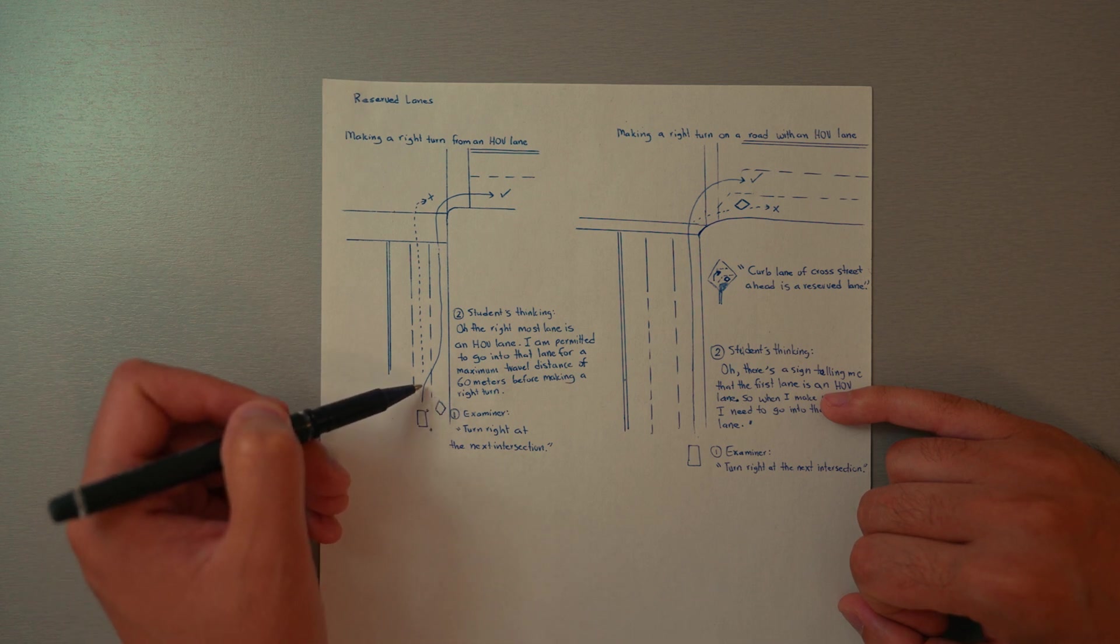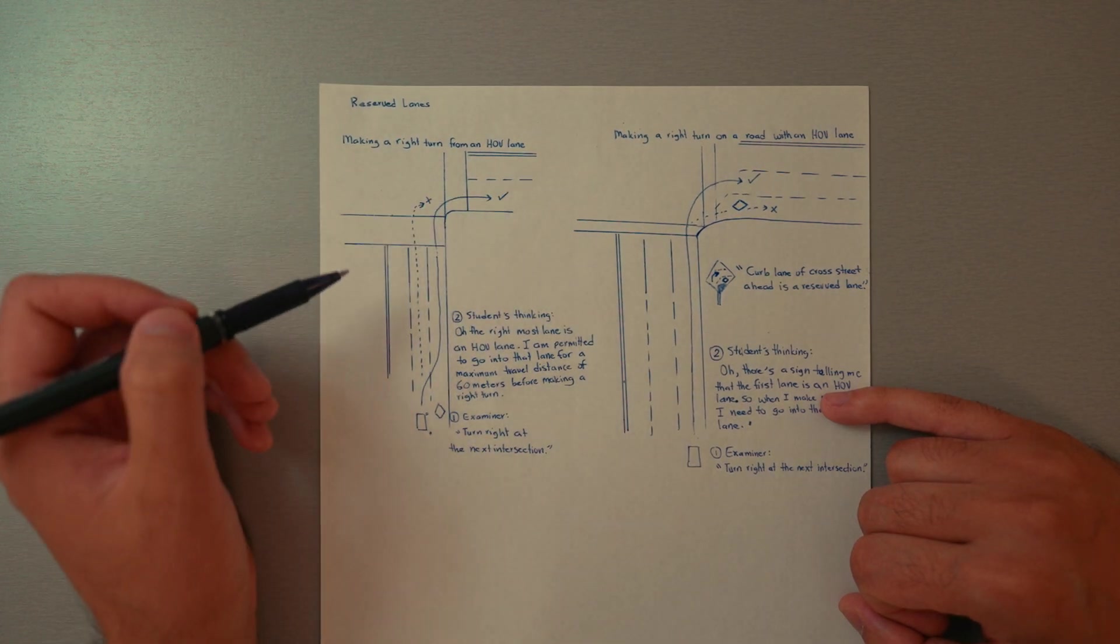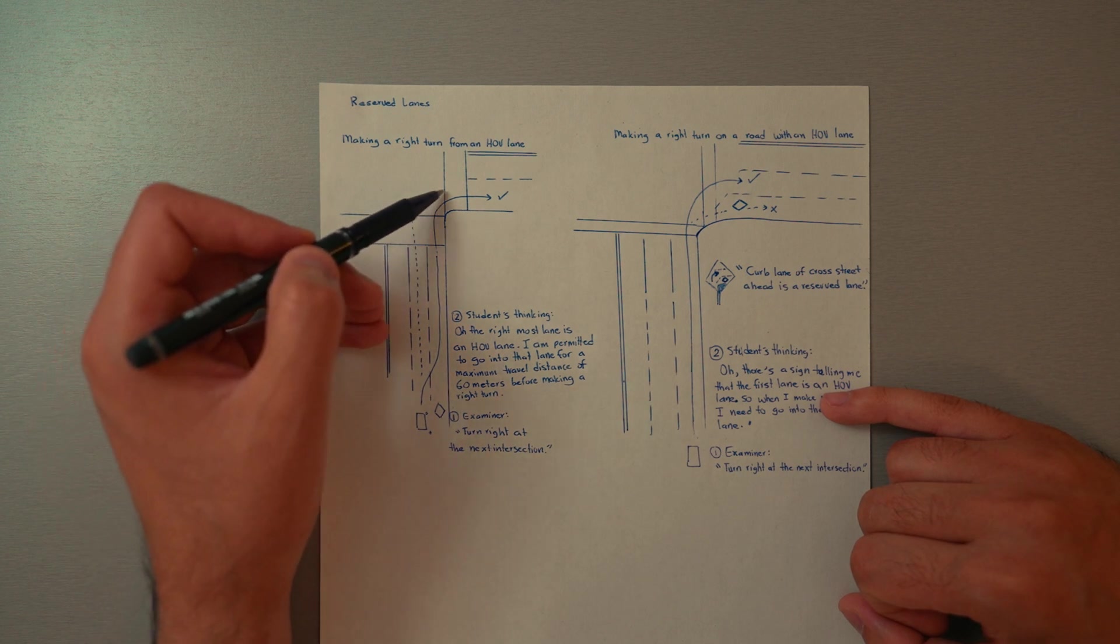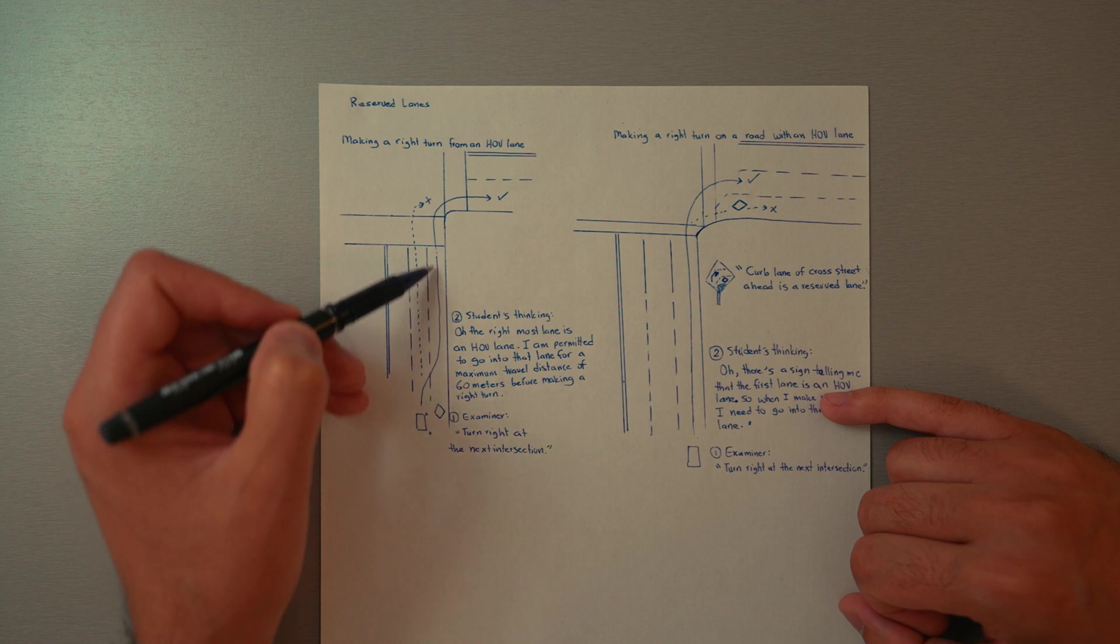We cannot turn wide at this intersection and presume that just because this is an HOV lane we cannot go into it and turn wide. Now on the flip side of things, if you're coming up to make a right turn on a road with an HOV lane...